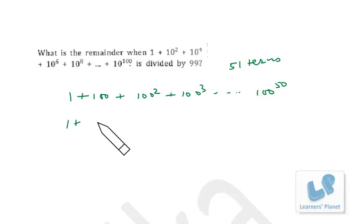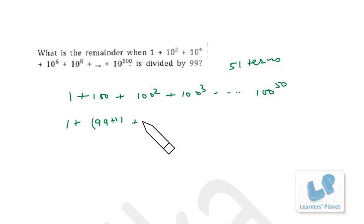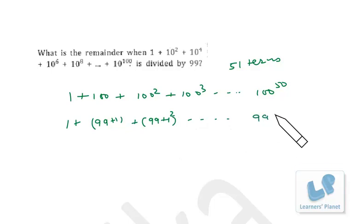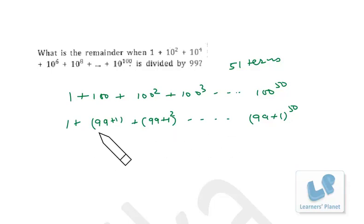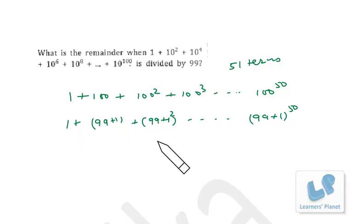This can be written as (99 + 1) plus (99 + 1) squared and so on, up to (99 + 1) raised to 50. When you divide the individual terms by 99, you will be getting a remainder of 1 in each case — 1, 1, 1 — up to here. So from this point to this point, 1 appears 50 times, and this additional 1 makes it 51 times.